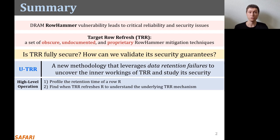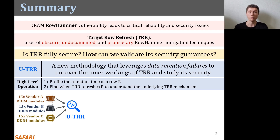At a high level, UTRR performs two steps. First, UTRR profiles the data retention time of a target row. Second, UTRR finds when the TRR mechanism refreshes that row and builds an understanding of the underlying TRR mechanism. Using UTRR, we analyzed 15 DDR4 DRAM modules from each of the three major DRAM vendors. Through these analyses, we make several observations regarding the TRR mechanisms implemented in these modules and craft new custom RowHammer access patterns that evade the TRR mechanisms and cause RowHammer bit flips.